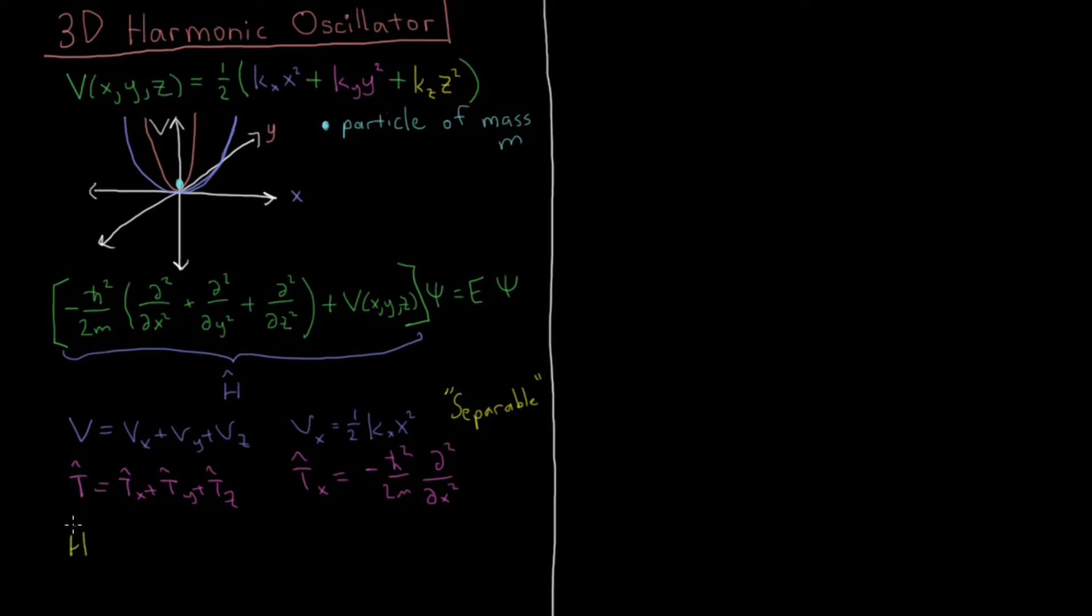So our total Hamiltonian can equal a Hamiltonian of x, y, and z. And because of this, we can use separation of variables that we've been using pretty much every time in this playlist that we've encountered partial derivatives or multidimensional functions. And this means that we're going to have a wave function which is a product of three one-dimensional wave functions, psi x, psi y, and psi z. And then all we have to do is solve the individual functions to get the total wave function and the total energy back.